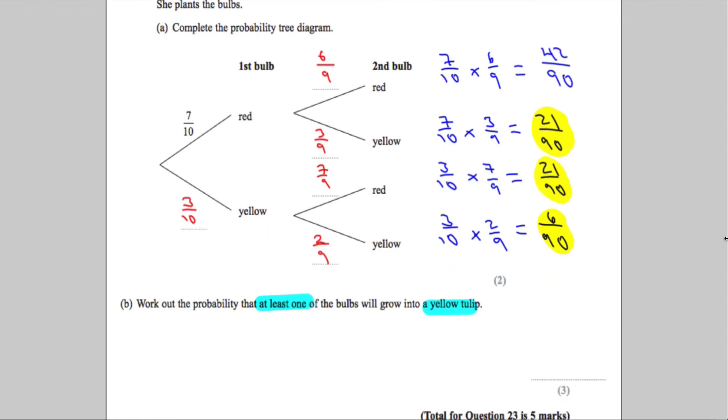What am I going to do with all those probabilities? We're going to add them up. 21 plus 21 plus 6 is going to give me 48. So the probability is going to be 48 out of 90.